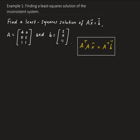So let's go ahead and find A transpose times A. A transpose will give us 4, 0, 0, 2, 1, 1, and then we're going to multiply this by 4, 0, 0, 2, 1, 1, which is A.